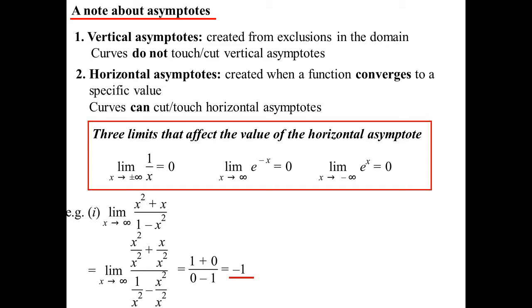One, the quickest way, of course, is to look at just the highest power, the coefficients of the highest power. So X squared's the highest power. And straight away then I can say, oh, it's one on negative one, negative one.